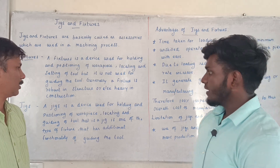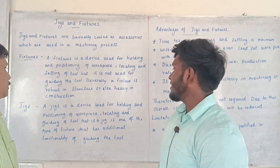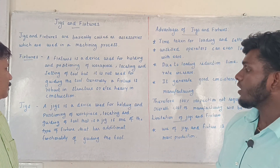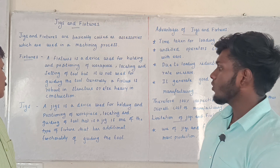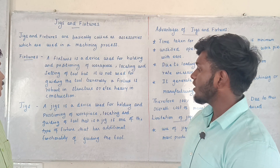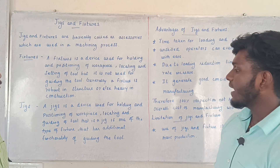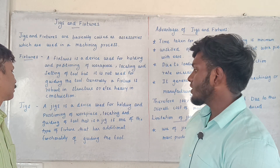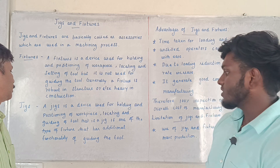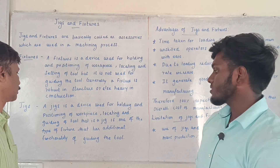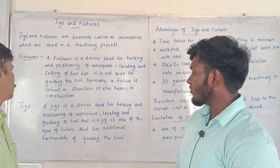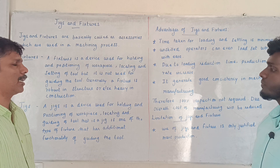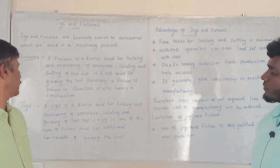A Jig is a device used for holding and positioning of a workpiece, locating and guiding of the tool. That is, a Jig is one type of fixture that has the additional functionality of guiding the tool. So guiding is the key feature of a Jig.